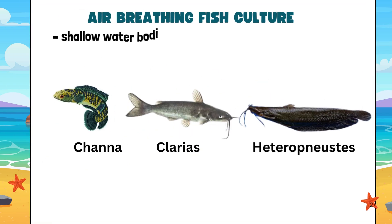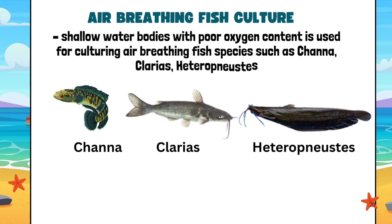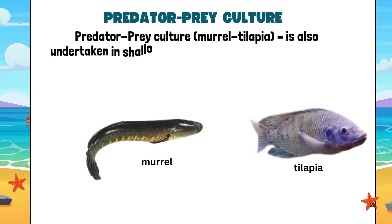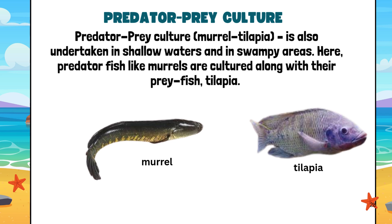Air-breathing fish culture is practiced in shallow water bodies with poor oxygen content. Species such as Channa, Clarias, and Heteropneustes are commonly cultured in this system because of their ability to survive in low-oxygen environments. Predator-prey culture, such as murrel-Tilapia culture, is undertaken in shallow waters and swampy areas. In this system, predator fish like murrel are cultured along with their prey fish, Tilapia.